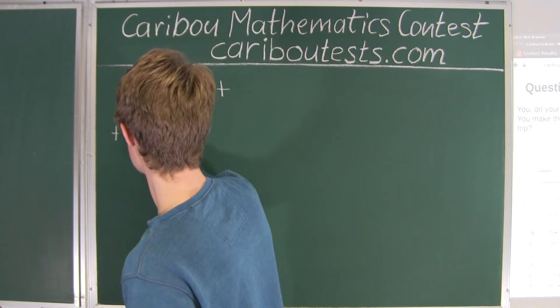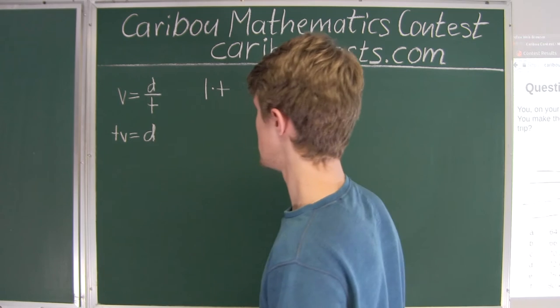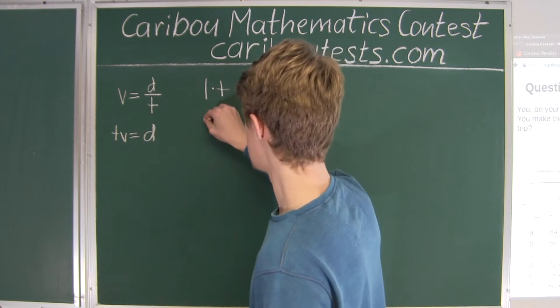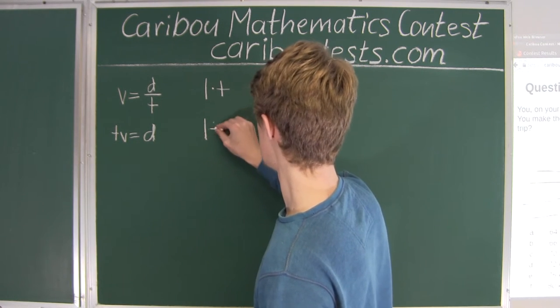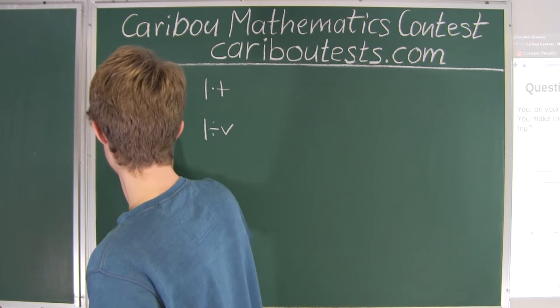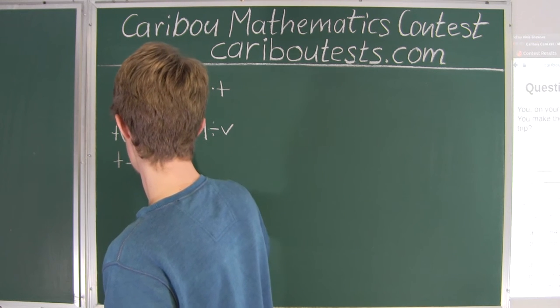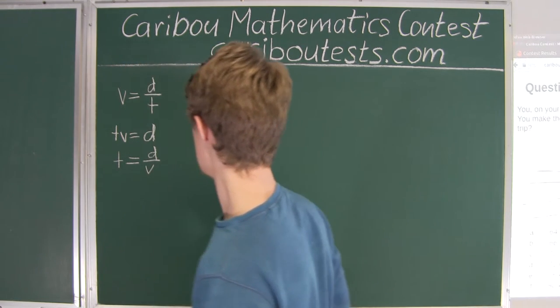Now since we just want T, we would divide both sides by V. Then we would have T is equal to distance divided by velocity.